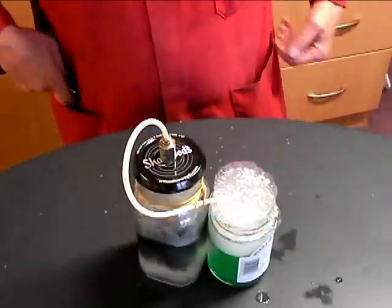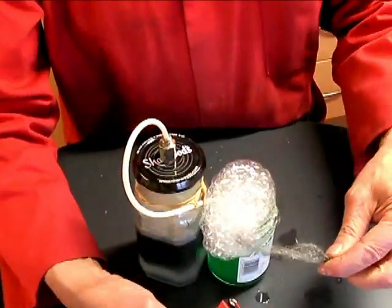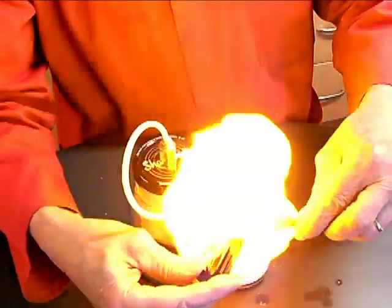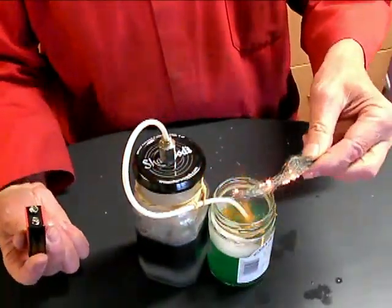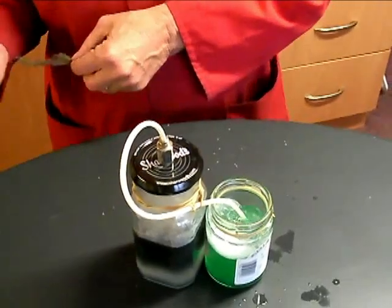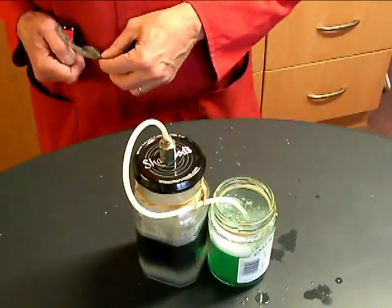This volatile vapour is easily ignited by the smallest spark. A PP3 battery and a piece of wire wool is all that is required.